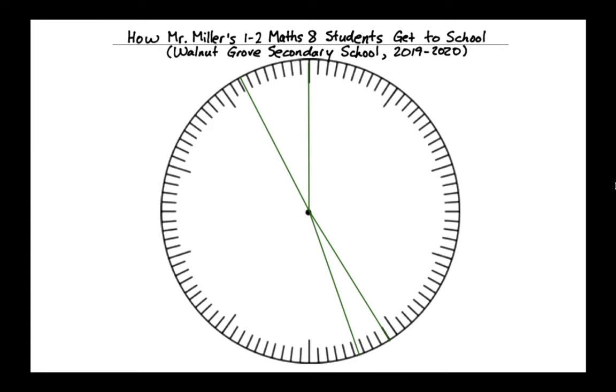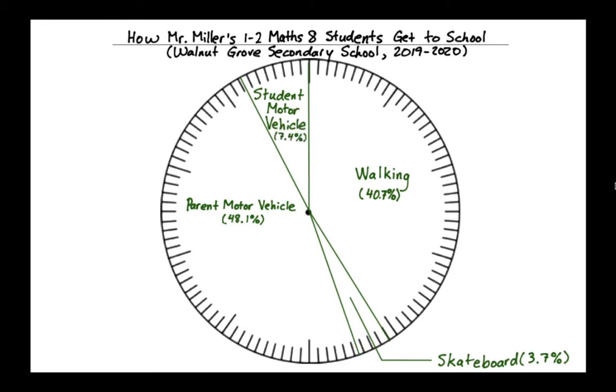So what we want to do now is we want to label each one of these pieces. So we want to put the name of the category and the percentage. So we're going to do that for each one of these. And what you'll notice is that for the one category that is particularly skinny, which is the skateboarding category, there's only one person in that category and it's only 3.7% and the angle is only 13 degrees. And I didn't feel that I could really write skateboard in here and 3.7% very easily. So I just drew a little line to the outside pointing from the outside in, that this is the skateboard category and the percentage that goes along with that.